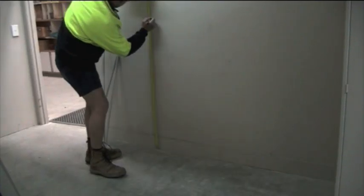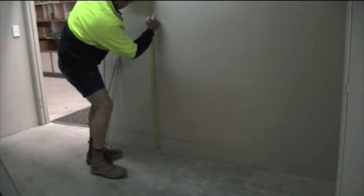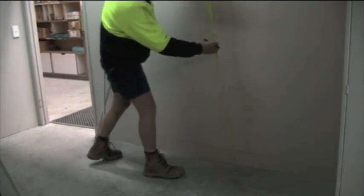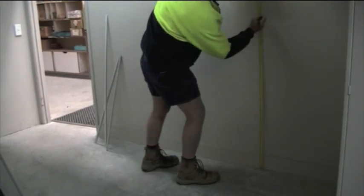Figure out what height off the floor you want to position the board and mark out two points on the wall. Average height off the floor is about 900mm.